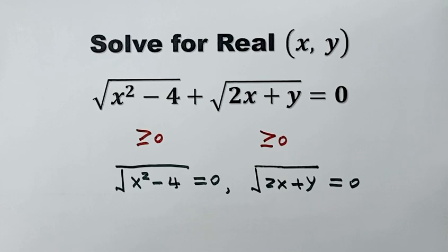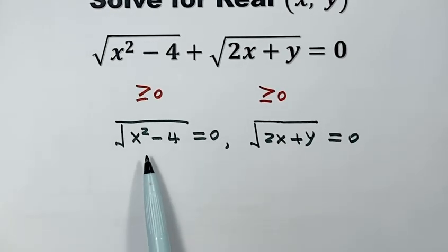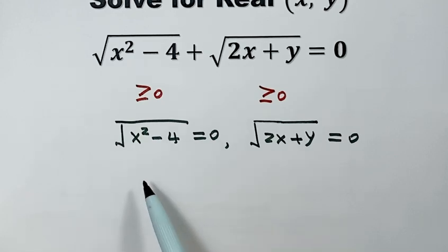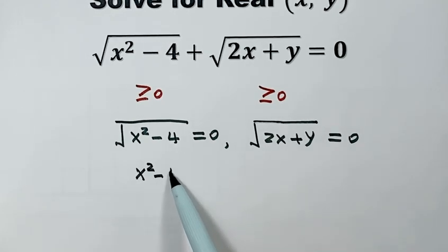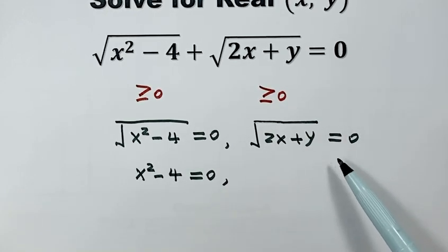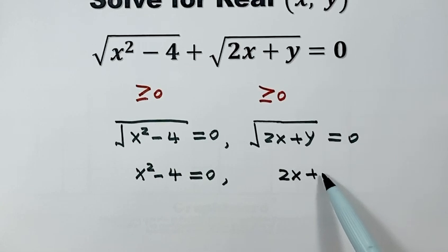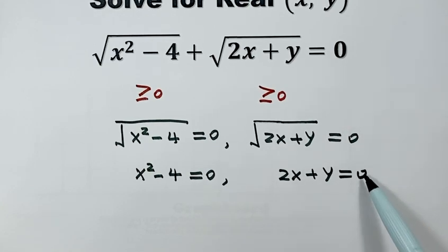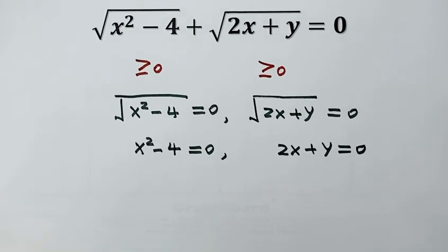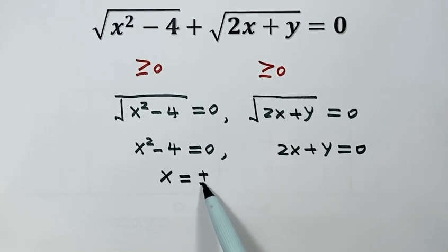So now we have two radical equations. Solve them together. Square both sides of the first equation: x squared minus 4 equals 0. Square both sides of the second: 2x plus y equals 0. For the first equation, add 4 to both sides, then take the square root of both sides, giving x equals positive or negative 2.